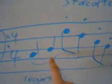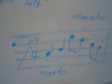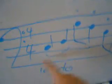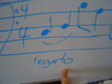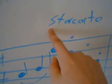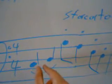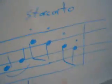Legato is usually indicated by a phrase marking, but if there's no staccato mark and no slur, you can assume it's legato. Legato means smooth, staccato means separate. Think of legato as links in a chain joined together, and staccato as links that are present but not connected — they're played separately.